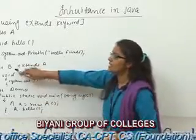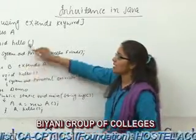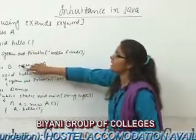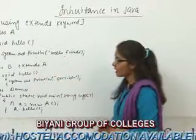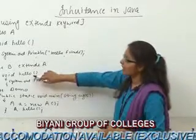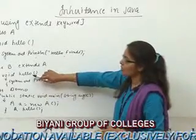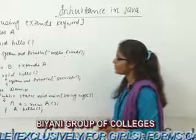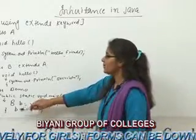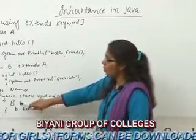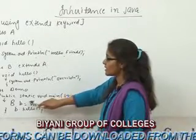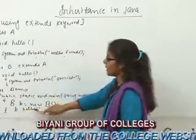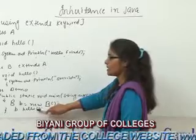Now class B is a subclass. This subclass is extending the properties of class A using the extends keyword, and we are overriding this method of the superclass here and printing 'override'. Now we have created the object of the subclass and from this object we are accessing the method of the subclass.